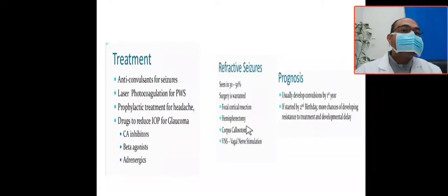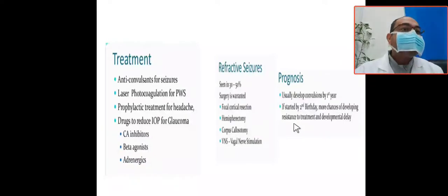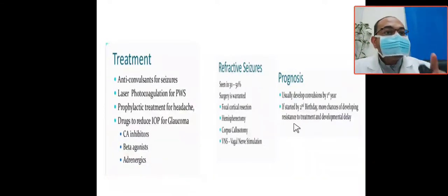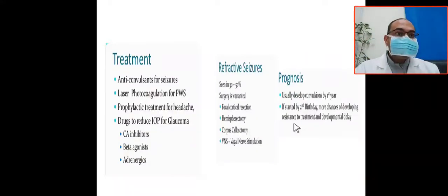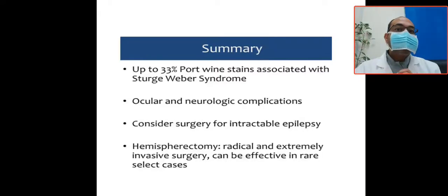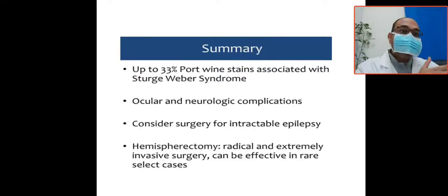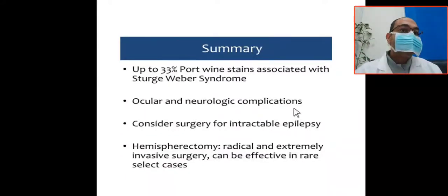The prognosis: follow this patient in the first year for seizures. If seizures happen in the second year, they tend to be refractory and very difficult to control, and the baby will be associated with developmental delay. In summary, about 33% of port wine stain cases are associated with Sturge-Weber Syndrome. The triad is: neurological abnormalities like seizure, port wine stain, and glaucoma.